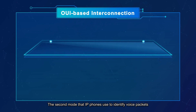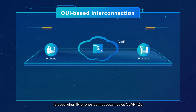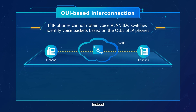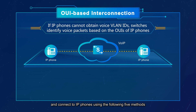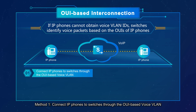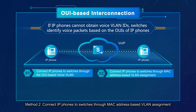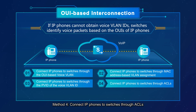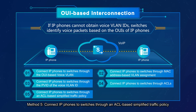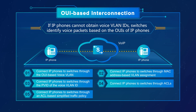The second mode is used when IP phones cannot obtain voice VLAN IDs. Instead, switches identify voice packets based on the OUI of IP phones and connect to IP phones using the following five methods: Method 1 — connect IP phones to switches through the OUI-based voice VLAN; Method 2 — through MAC address-based VLAN assignment; Method 3 — through the PVID of the voice VLAN ID; Method 4 — through ACLs; Method 5 — through an ACL-based simplified traffic policy.